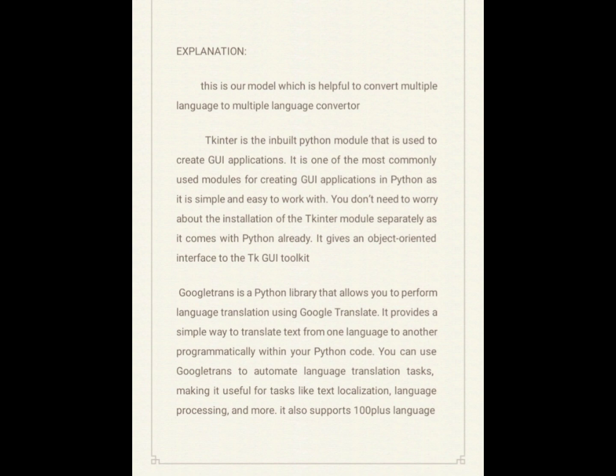Google Trans provides a simple way to translate text from one language to another programmatically within your Python code. You can use Google Translate to automate language translation tasks, making it useful for tasks like text localization, language processing, and more. It also supports 100-plus languages.